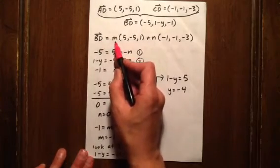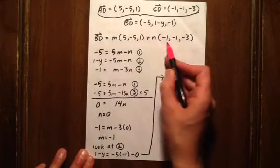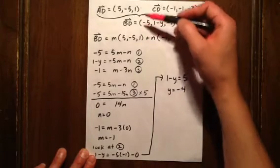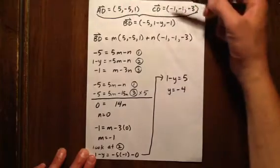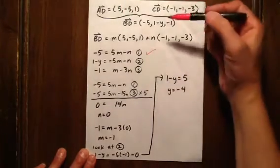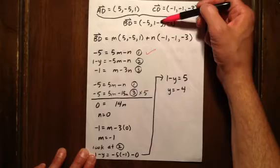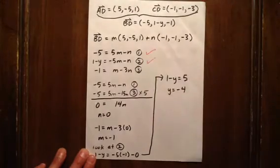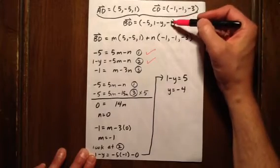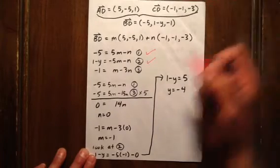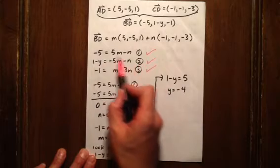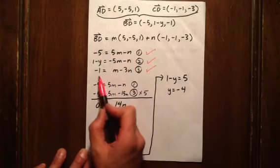BD is now a linear combination of each of the other two vectors. That means that -5 equals 5m minus n. That means that 1 minus y equals -5m minus n. And finally, that means that -1 equals m minus 3n. Well, let's skip equation 2 for the moment, and let's focus in on equations 1 and 3.